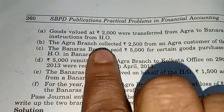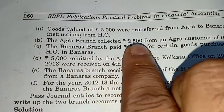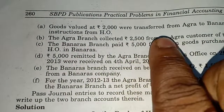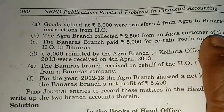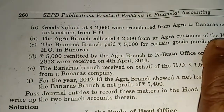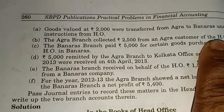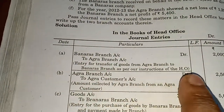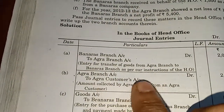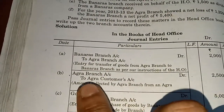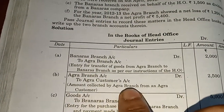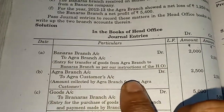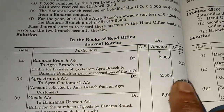The Agra branch collected Rs. 2500 from an Agra customer of the head office. The general entry will be: Agra branch account debit to Agra customer account — amount collected by Agra branch from an Agra customer, Rs. 2500.